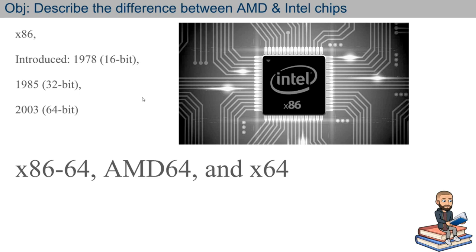x86 was introduced — I'm putting quotations around 'introduced' because the design started in 1976. By 1978, Intel felt confident enough to introduce the architecture, or at least their plans for it. But a chip that actually used this architecture was released in 1979. By 1985, they had a 32-bit version, and then by 2003 Intel came out with an x86-64, or just x64 chip, utilizing 64-bit addresses and instructions.